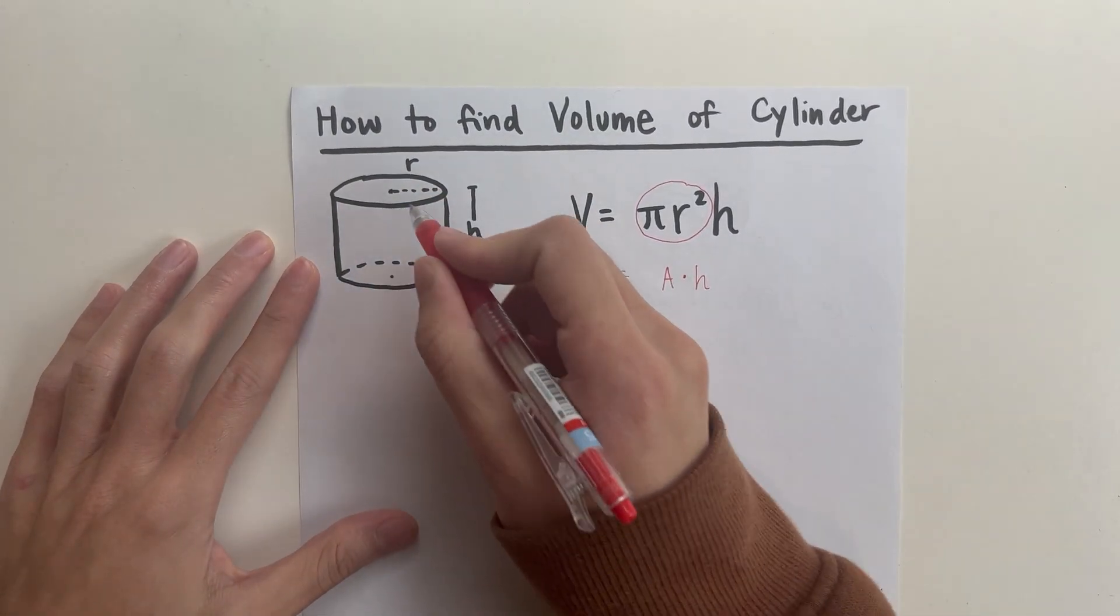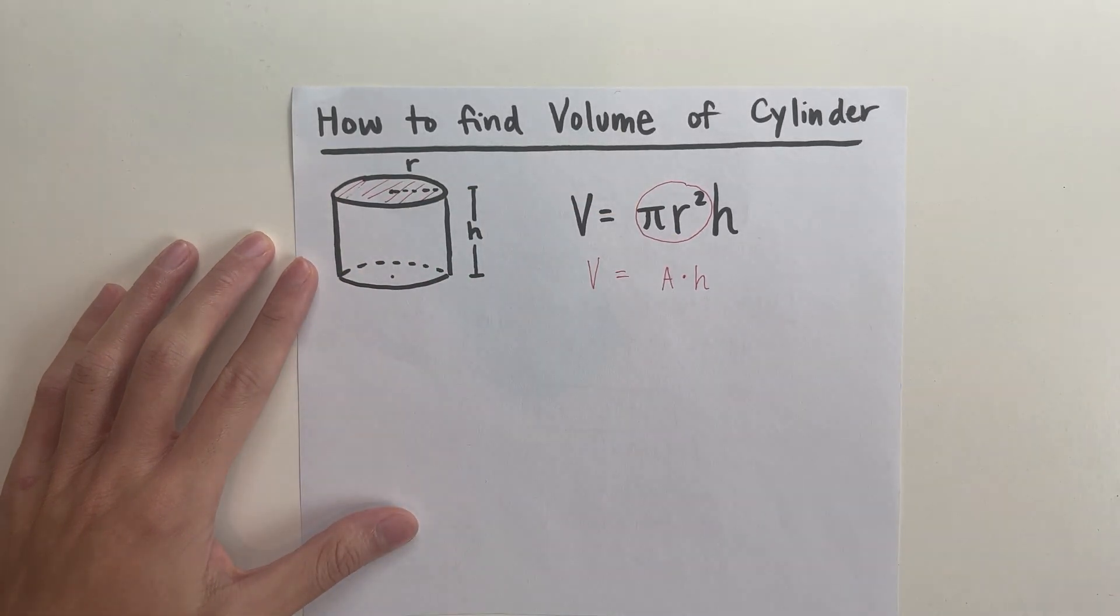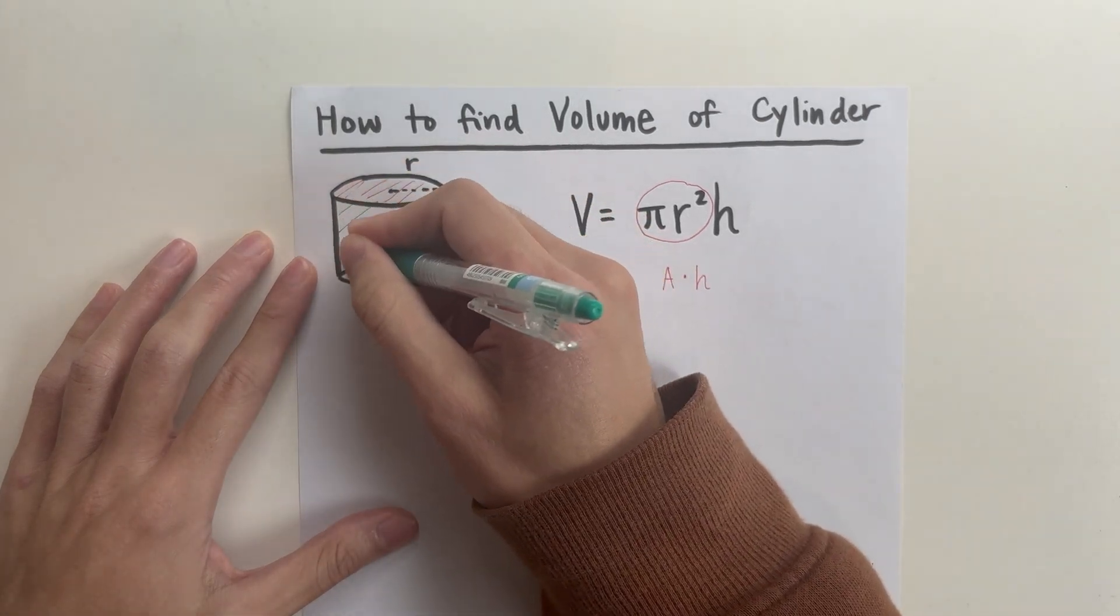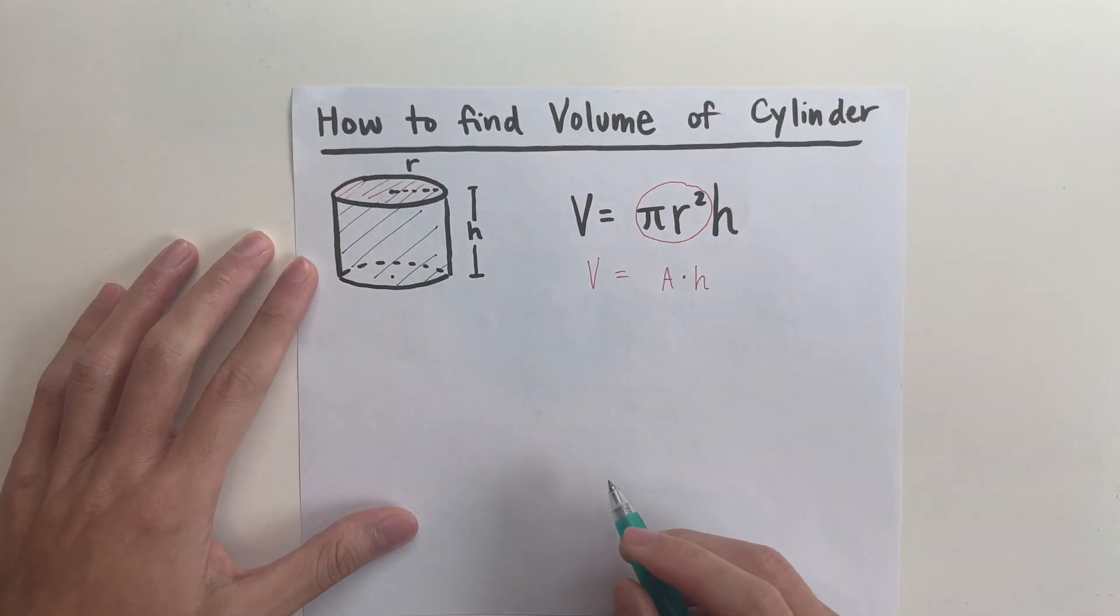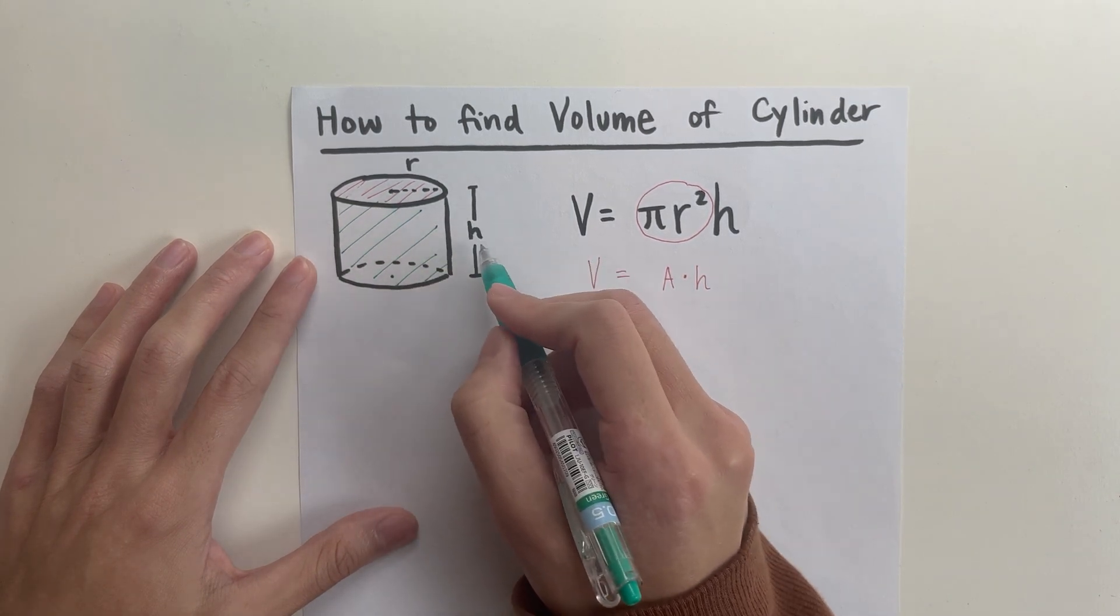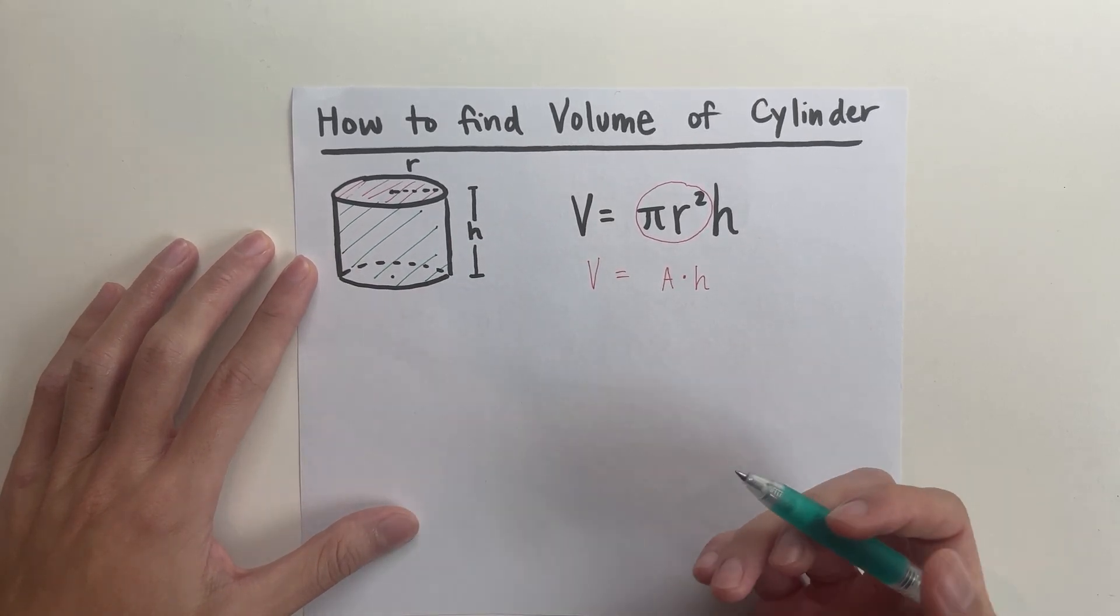So the area of a circle is going to be denoted in the red portion above, but the overall volume that we're going to find is right over here, how much space it takes. So it's the red area multiplied by the height to get the overall volume or how much space it contains.